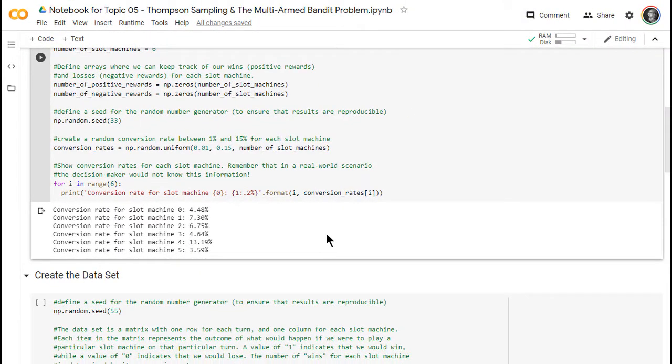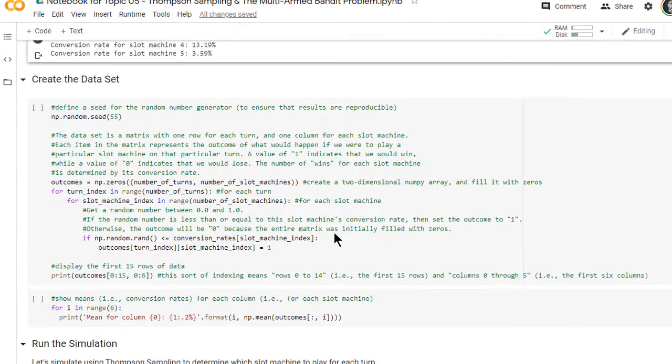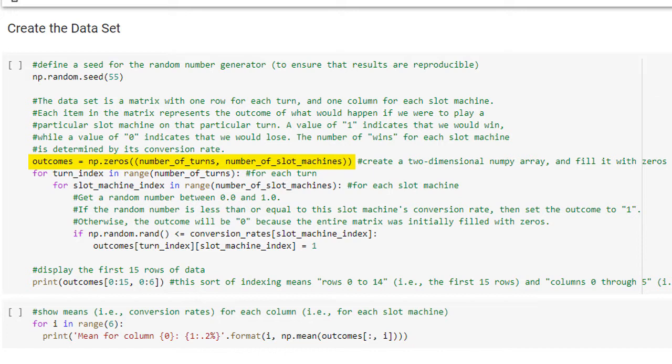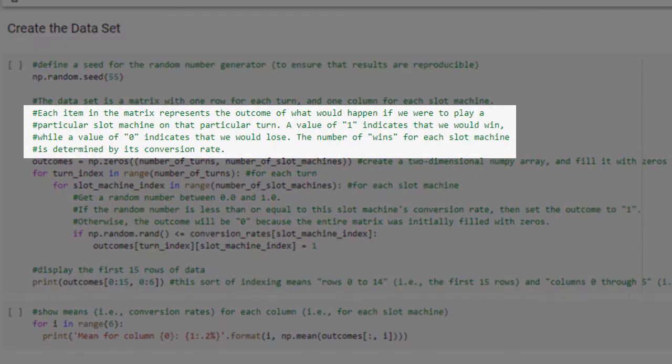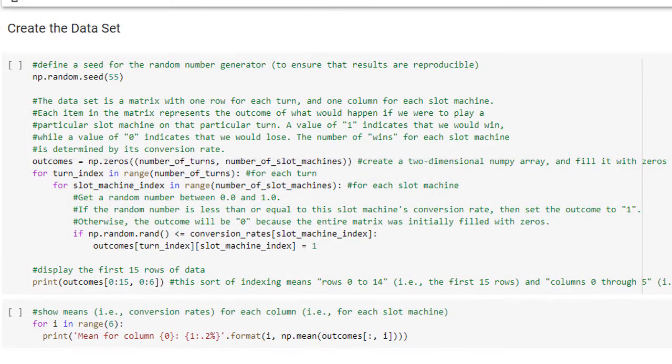Now that we've defined the parameters of our environment, we can proceed with creating the primary dataset. Our dataset is simply a matrix that has one row for each turn and one column for each slot machine. In this scenario, our dataset thus contains 1,000 rows and 6 columns because we have 1,000 turns and 6 possible slot machines. Each item in the matrix represents the outcome of what would happen if we were to play a particular slot machine on a particular turn. A value of 1 indicates that we would win, while a value of 0 indicates that we would lose. The matrix thus contains 6,000 possible outcomes, but only 1,000 of those outcomes will actually be observed because we can only play one slot machine per turn. Remember that the number of wins for each slot machine is determined by its conversion rate. After using a few nested for loops to generate our dataset, we then print the first 15 rows of data to the screen so that we can get a sense of what the dataset looks like. Let's run this code cell.